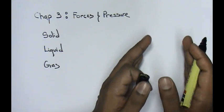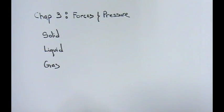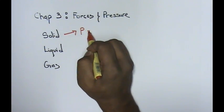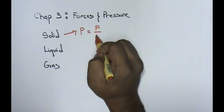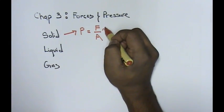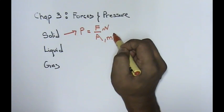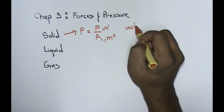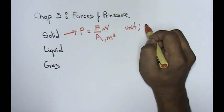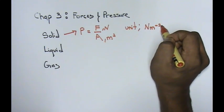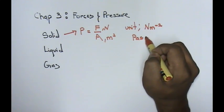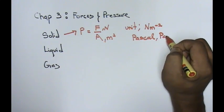You will learn about three famous scientists' principles. For solid, what you are about to learn talks about a formula where pressure equals force over area. Your force is in Newtons and your area is in meter squared. The unit is written as Nm⁻², or you can also write the unit as Pascal, short form Pa.